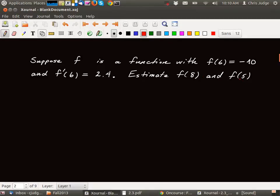Okay, in both cases we're going to use the local linear approximation formula. So let's remind ourselves of what that formula says. It says that f of b is approximately f of a plus f prime of a times b minus a.